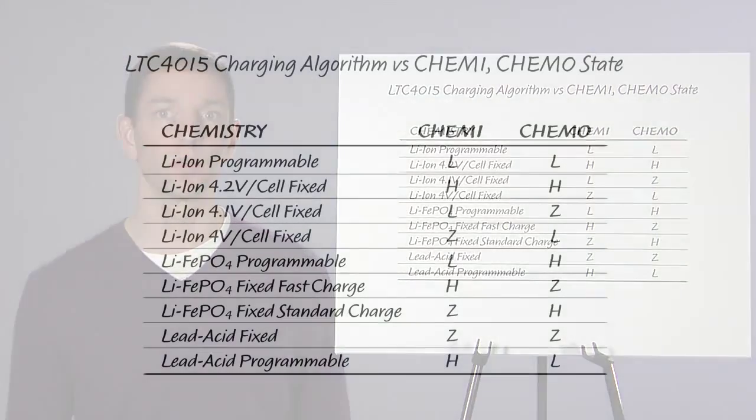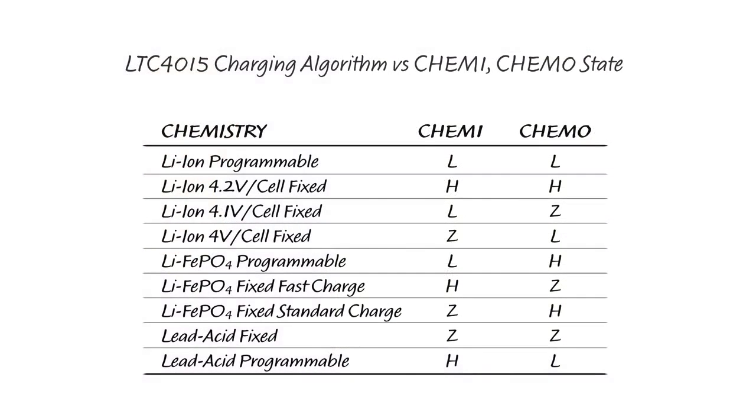This slide shows how to program CHEM 1 and CHEM 0. Each of the 3 chemistries has at least 1 fixed, non-programmable algorithm, as well as 1 programmable algorithm.